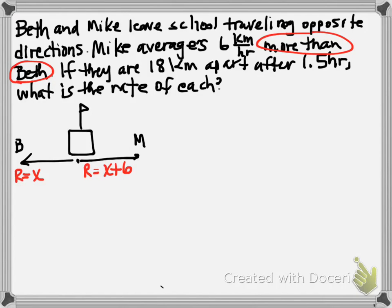Now, what does it say about time? It actually never mentions time. But they're leaving school traveling in opposite directions. So the assumption is they're leaving at the same time. So time for both of them is going to be... Oh, wait a second. It does tell us what their time is. We want to know at 1.5. Okay?